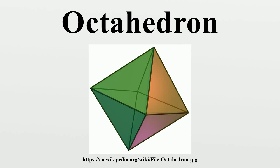Cartesian coordinates: an octahedron with edge length square root 2 can be placed with its center at the origin and its vertices on the coordinate axes. The Cartesian coordinates of the vertices are then given. In an X-Y-Z Cartesian coordinate system, the octahedron with center coordinates and radius R is the set of all points satisfying a given equation.